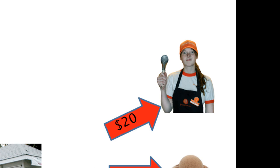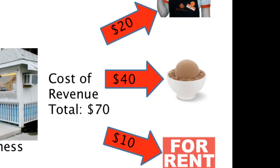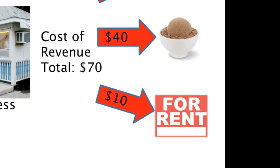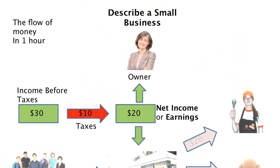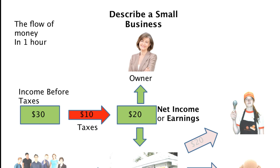$20 of that $100 went to her one employee, who manages everything from scooping ice cream to keeping the books — Nancy pays her $20 an hour. Then there's the material cost: the milk, bowls, spoons — let's say $40. The last cost is for the land or the shack she's renting, which works out to $10 for that hour. All of these are cost of revenue, totaling $70.